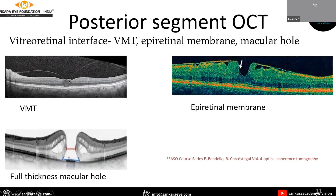Coming to posterior segment OCT, various vitreoretinal interface defects can be seen. As we can see here, vitreomacular traction is present, changing the contour of the fovea. Here we can see an epiretinal membrane with pseudofoveal formation. In this image, we can see a full thickness macular hole.